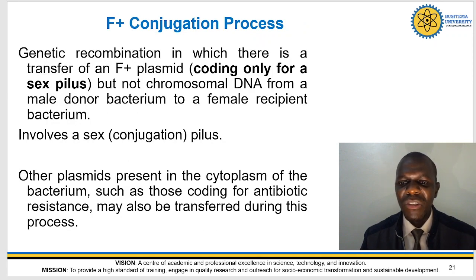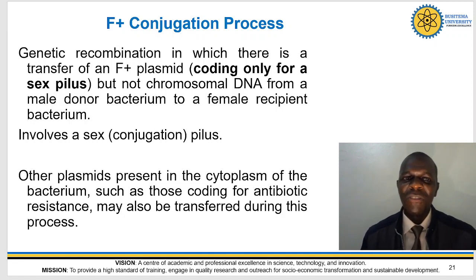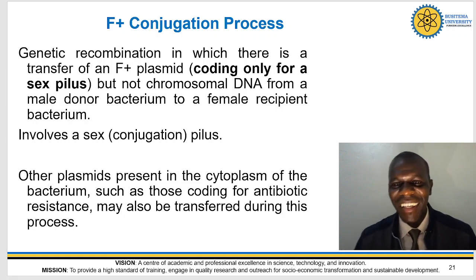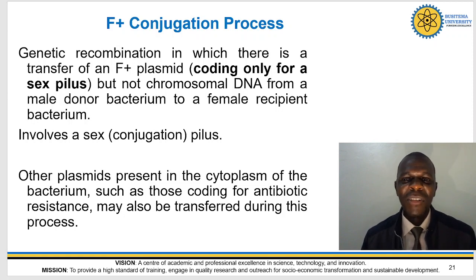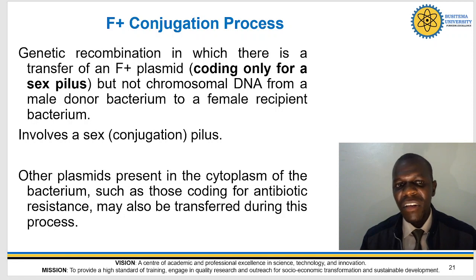In F+ conjugation, genetic recombination involves the transfer of an F+ plasmid coding only for sex pili but not chromosomal DNA from a male donor bacterium to a female recipient bacterium, and it involves sex or conjugation pili. Other plasmids present in the cytoplasm of a bacterium, such as those coding for antibiotic resistance, may also be transferred during this process. That's the F+ conjugation process.